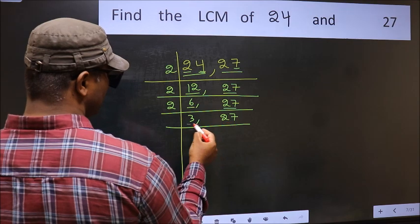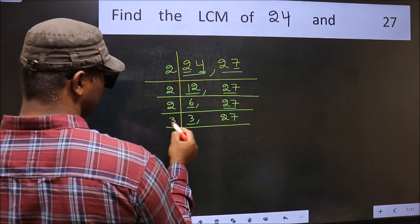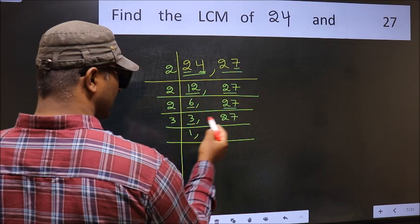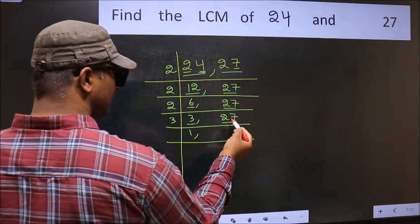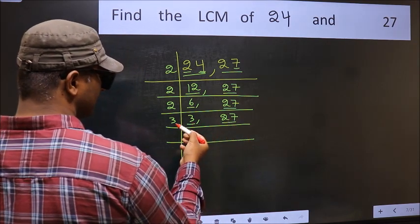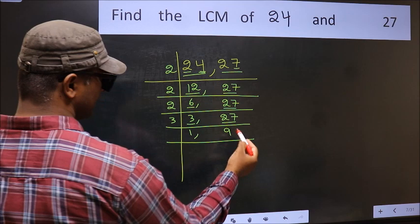Now we have 3. 3 is a prime number, so 3 times 1 is 3. The other number is 27. When do we get 27 in the 3 times table? 3 times 9 is 27.